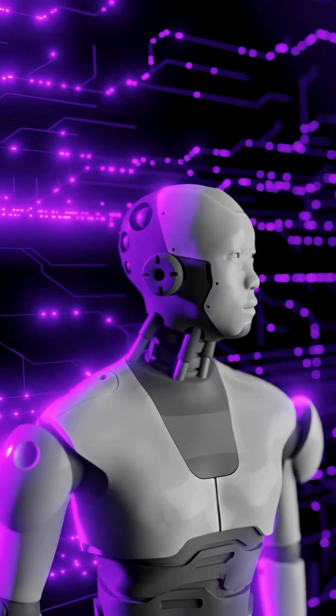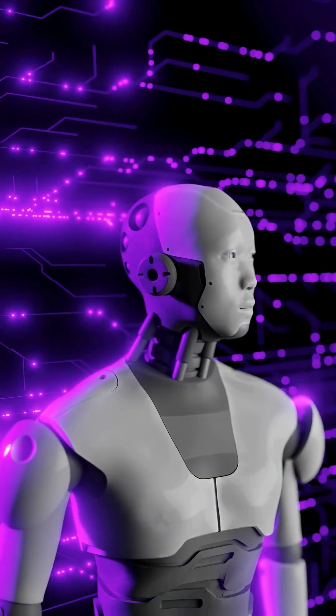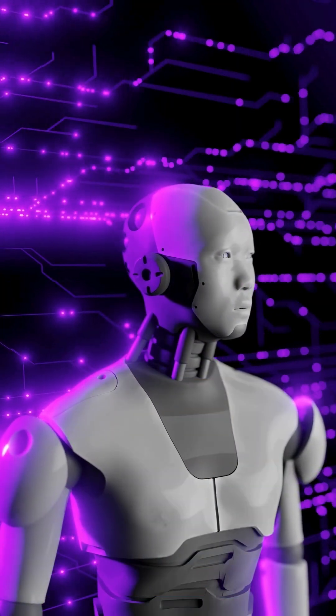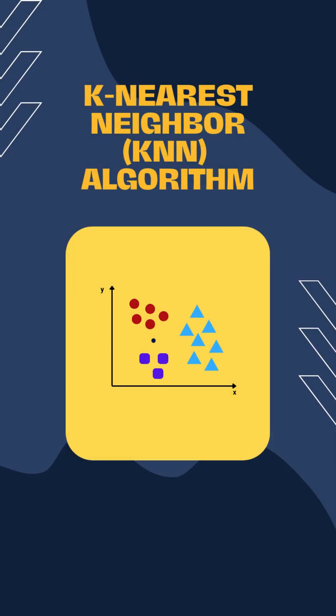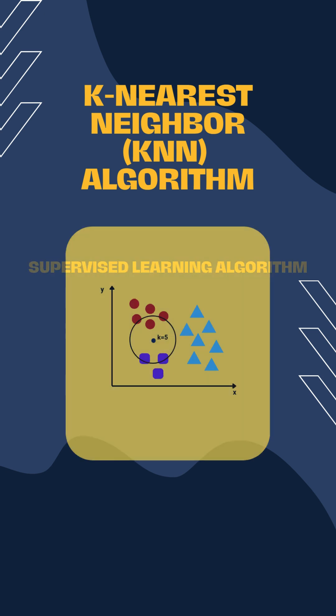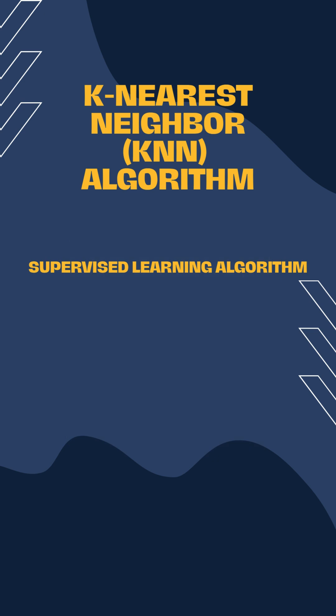Ever wondered how machines recognize patterns? Let's talk about KNN, one of the simplest yet powerful machine learning algorithms. KNN stands for K-Nearest Neighbors — it's a supervised learning algorithm used for classification and regression.